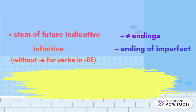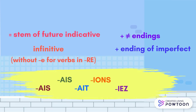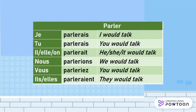The endings are: first person singular -ais, second person singular -ais, third person singular -ait, first person plural -ions, second person plural -iez, third person plural -aient. For instance, 'parler' (to talk) follows this pattern.